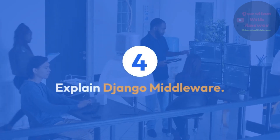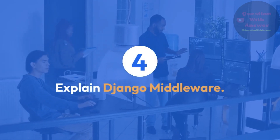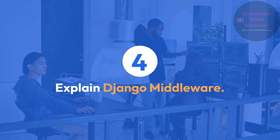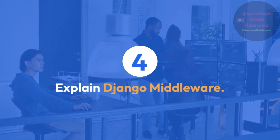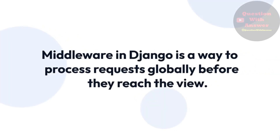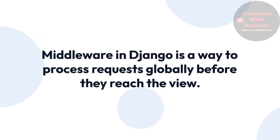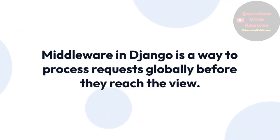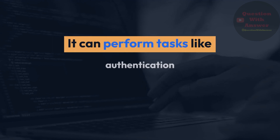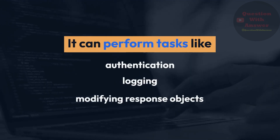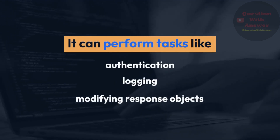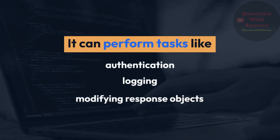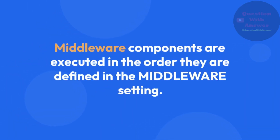Question 4: Explain Django middleware. Answer: Middleware in Django is a way to process requests globally before they reach the view. It can perform tasks like authentication, logging, or modifying response objects. Middleware components are executed in the order they are defined in the middleware setting.